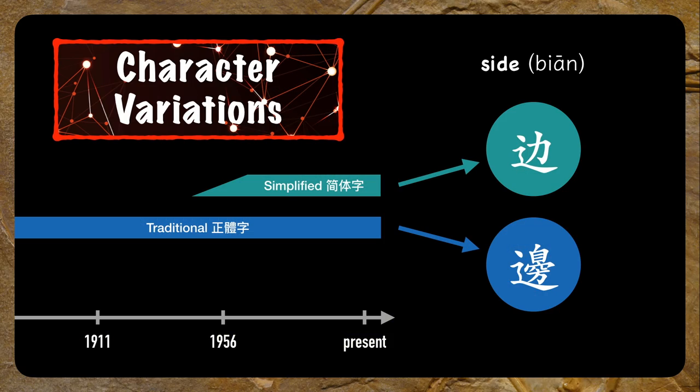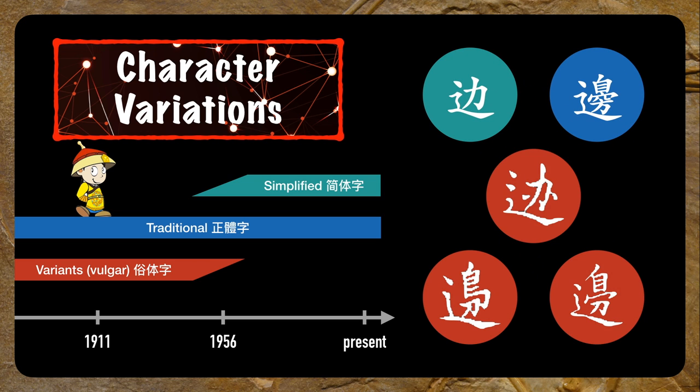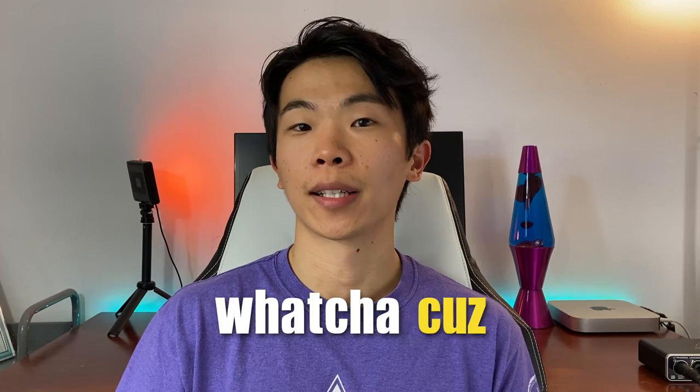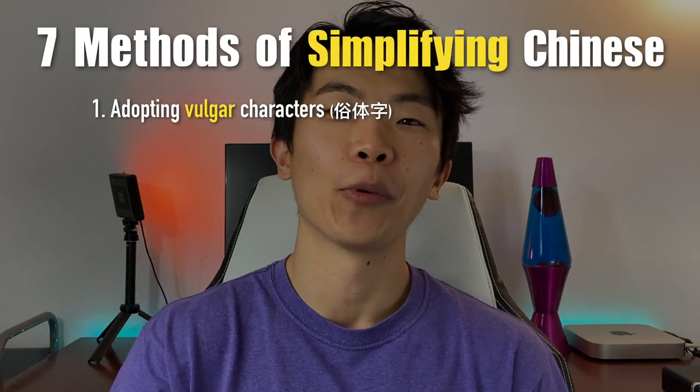So with that in mind, let's talk about the writing system. The traditional characters we have today are more or less the same ones used in the Qing Dynasty. But many people don't realize that during that time, there were also many variant forms of characters circulating in day-to-day life. These were called 苏字, or vulgar characters — basically unofficial, easier-to-write versions of the standard characters. Think of English words like 'watcha,' 'cuz,' 'gonna' — people use these all the time, but you wouldn't use them in formal documents. Such was the state of vulgar characters in China: people used and understood them, but if you wanted to pass your imperial exam, they better not find a single vulgar character in your essay.